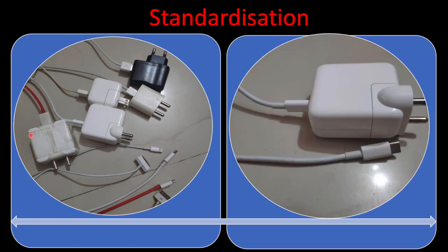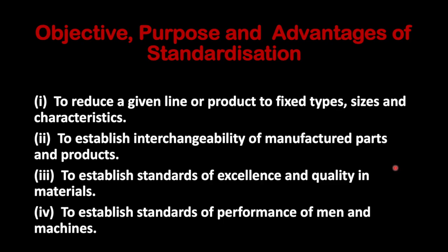The objectives or advantages of standardization include: first, to reduce a given line of product to fixed types, sizes and characteristics — we do not want too many types or sizes, we want to reduce to one standard. Second, to establish interchangeability, which is very important to understand.